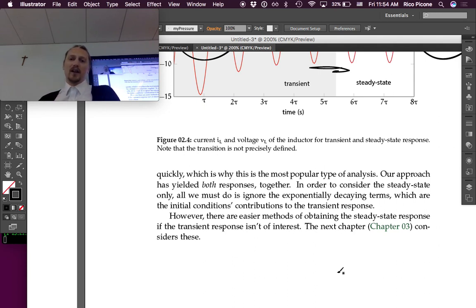Our approach has yielded both responses together. In order to consider the steady state only, all we must do is ignore the exponentially decaying terms - just set that term to zero, and that's the steady state, which are the initial conditions contribution to the transient response. However, there are easier methods of obtaining a steady-state response if the transient response isn't of interest. The next chapter considers these.